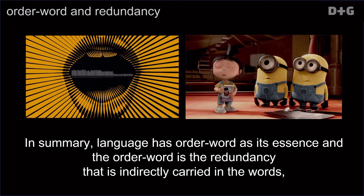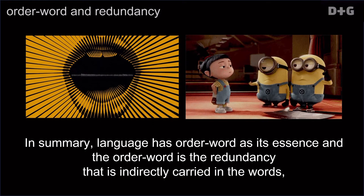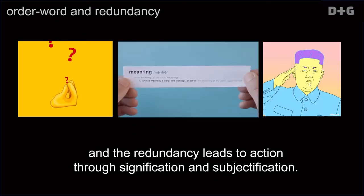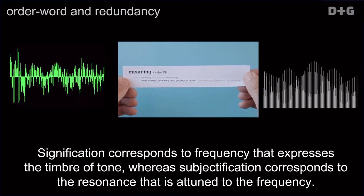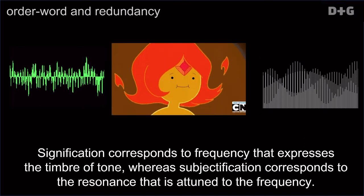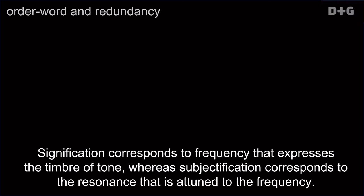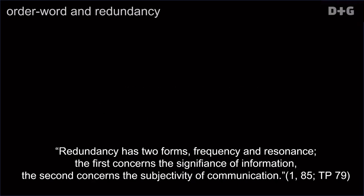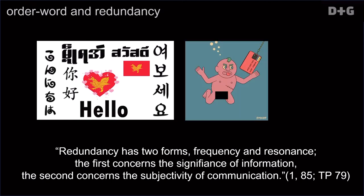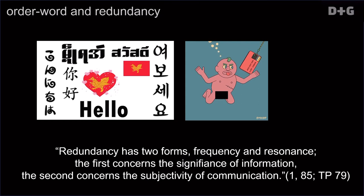In summary, language has order word as its essence and the order word is the redundancy that is indirectly carried in the words. And the redundancy leads to action through signification and subjectification. Signification corresponds to frequency that expresses the timbre of tone, whereas subjectification corresponds to the resonance that is attuned to the frequency. Redundancy has two forms: frequency and resonance. The first concerns the significance of information, the second concerns the subjectivity of communication. However, here is one more to be added.